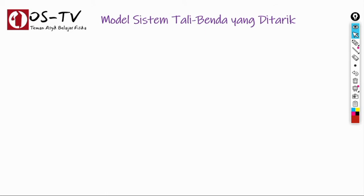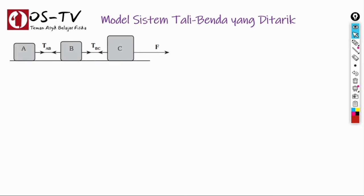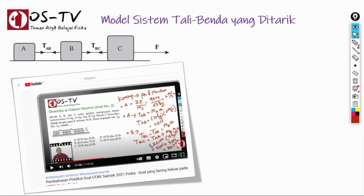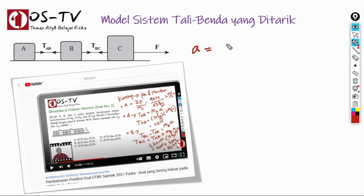Kita lanjutkan pada kasus sistem tali benda yang ditarik pada bidang datar. Pada video part 1 sudah dibahas cara menyelesaikan model soal ini. Biasanya yang ditanyakan pada soal seperti ini adalah percepatan sistem dan tegangan tali. Percepatan sistem — yang nantinya sama dengan percepatan benda A, B, maupun C — nilainya adalah A = ΣF / M total.